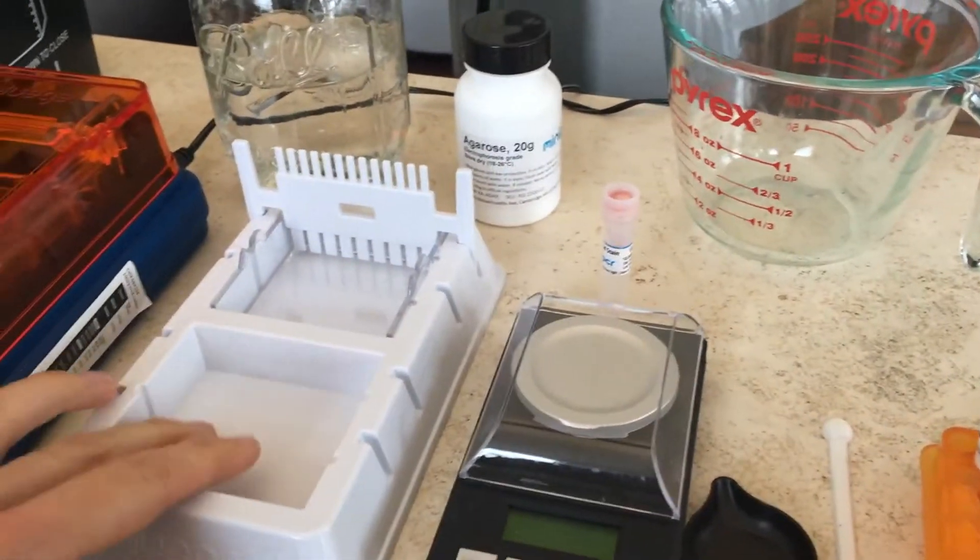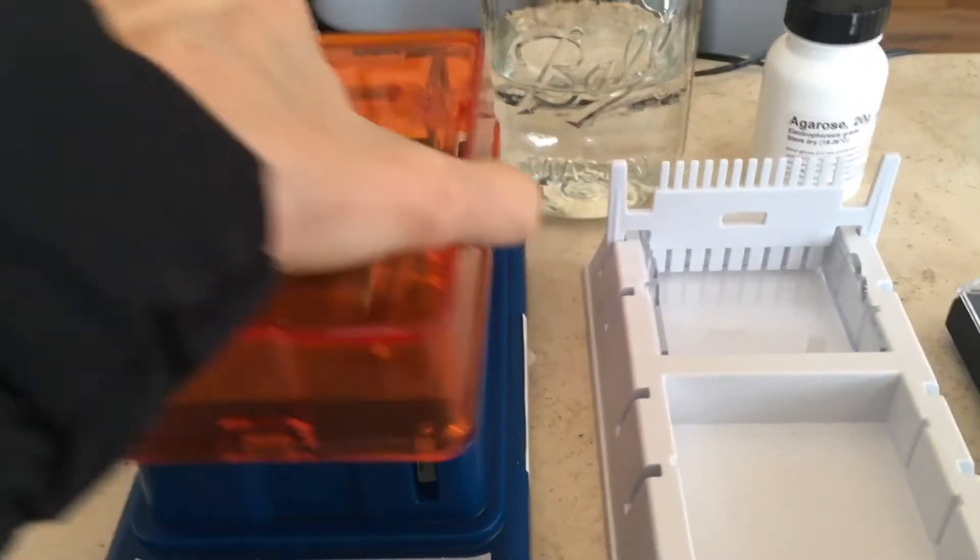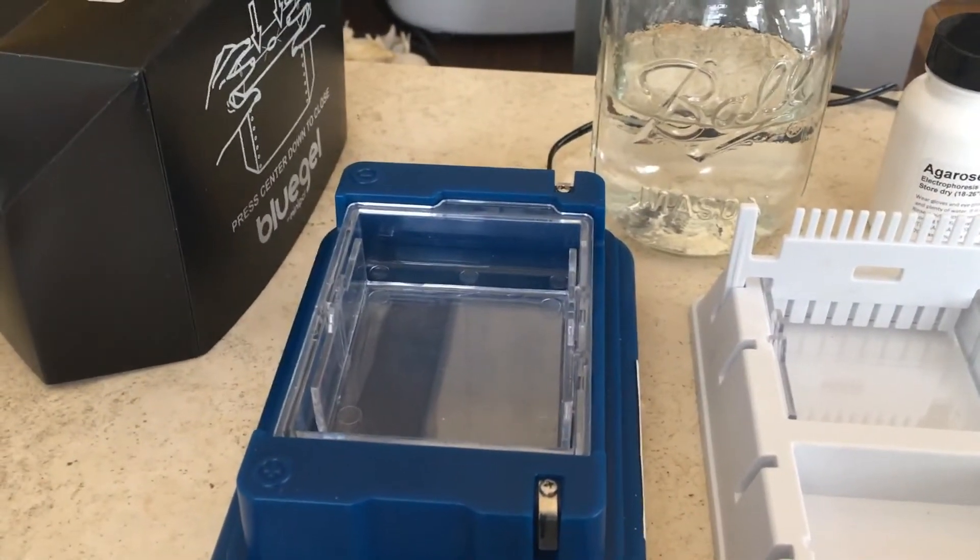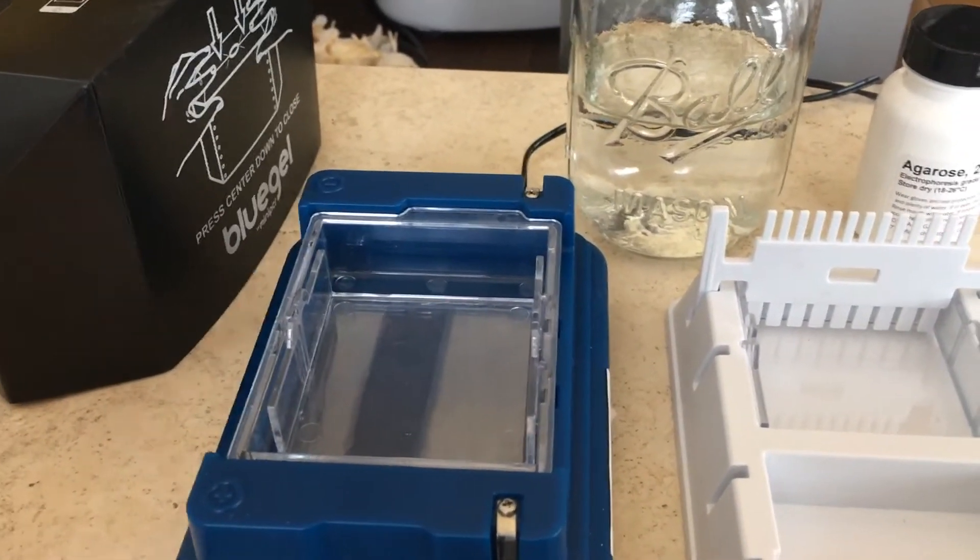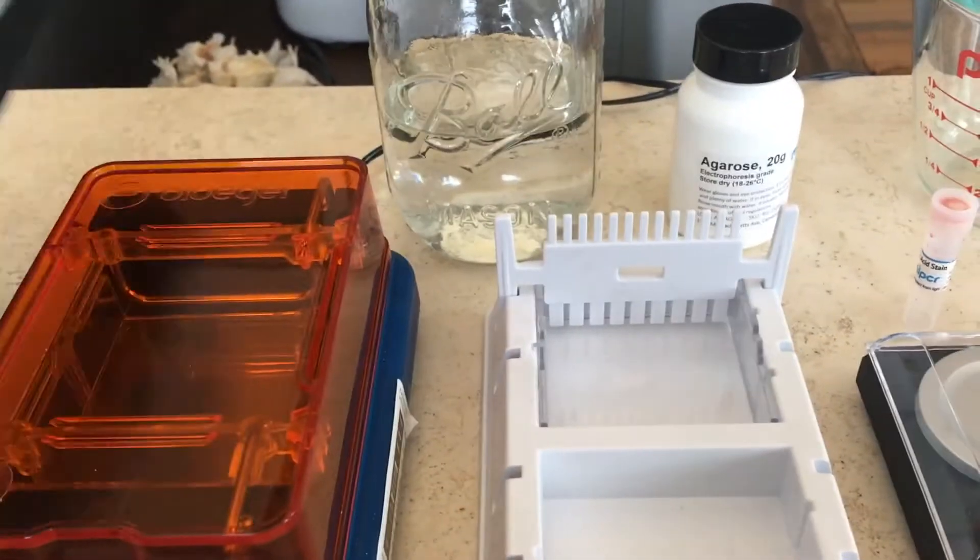We're going to pour a gel in here. There's a comb. This is our actual gel electrophoresis setup. We're going to put the gel in here and we're going to put some buffer on it and then we're going to force the DNA through it. This once again allows us to see it because you get better contrast looking through here.